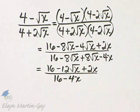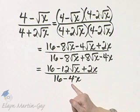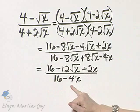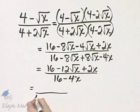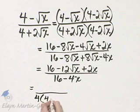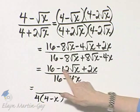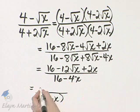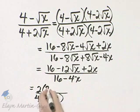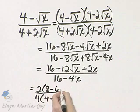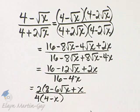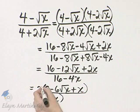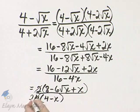Is there any other simplifying that can be done? The answer is yes. Notice there's a common factor of 4 here in the denominator that can be factored out. In the denominator, I factor out 4 and I'm left with 4 minus x. What about in the numerator? From 16, 12, and 2, I can factor out a common factor of 2, and I'm left with 8 minus 6 square root of x plus x. Now I can divide out a common factor of 2 — 2 divided by 2 is 1, and 4 divided by 2 is 2.